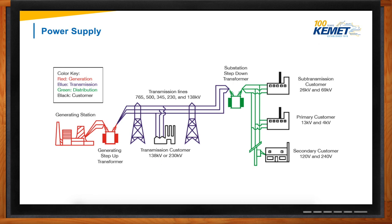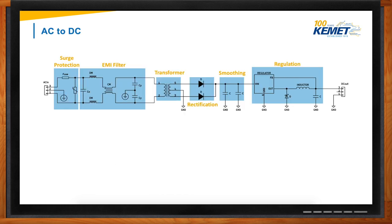Most of our homes are considered a secondary customer. Our homes have several electronic devices such as refrigerators, computers, appliances, and TVs, and the power requirements may vary depending on the device you're trying to power. This is where a power supply is essential. The final stage of power delivery is done by the power supply where DC power is needed. The overall architecture of a power supply design involves a surge protection stage and an EMI filter stage.